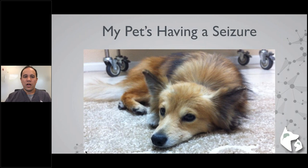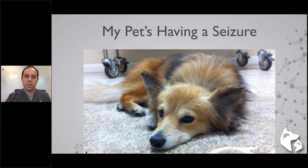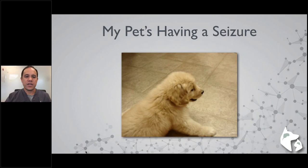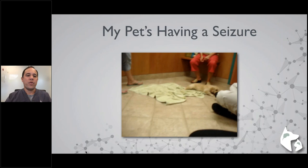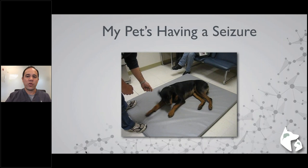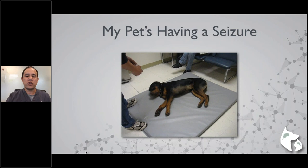Another example is myoclonus — rhythmic contractions of muscle groups on the head and limbs; that dog had distemper. A dog with narcolepsy can also be confused for a seizure when a pet owner describes their dog passing out and being unresponsive. Other conditions that can mimic seizures include syncope, severe vestibular disease, and severe pain.